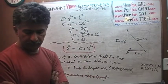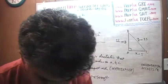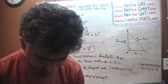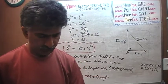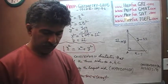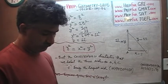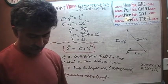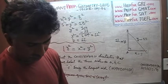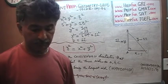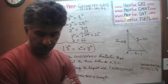All right, I'll see you tomorrow — day number seven. Tomorrow we'll talk about the 3-4-5 triangle, which is a right-angled triangle but a very special kind of right-angled triangle. We'll talk about that triangle tomorrow.